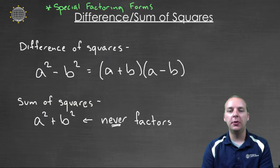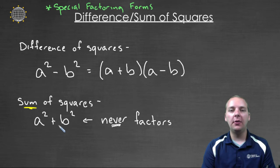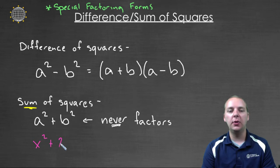Remember two things. One, if you have a sum of squares, it will never factor. This is a very common mistake that students make. If you have something like x² + 25, it feels like it should factor, but it doesn't. This is what we call a prime polynomial.